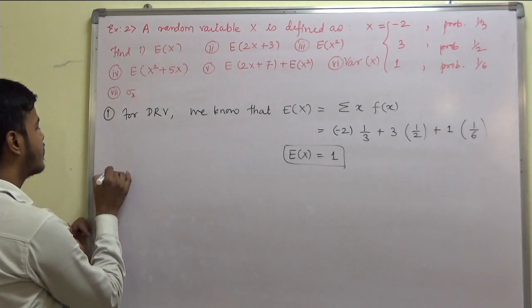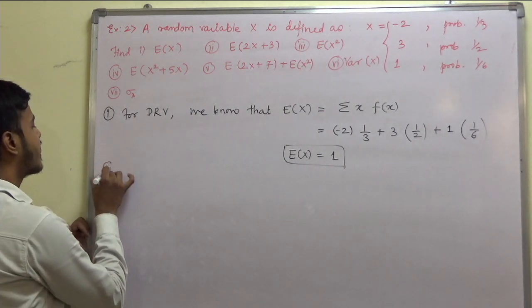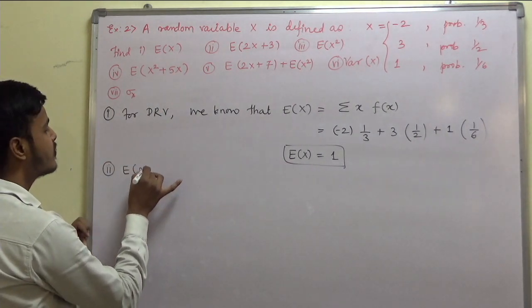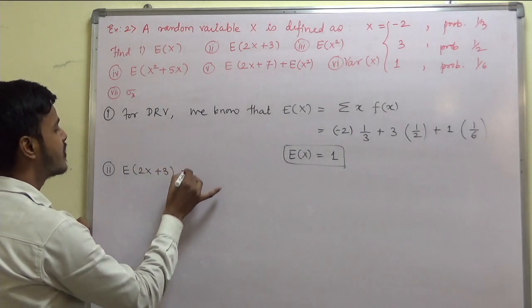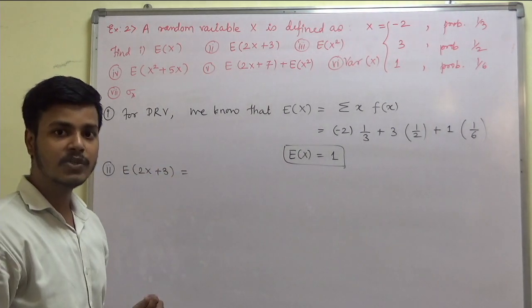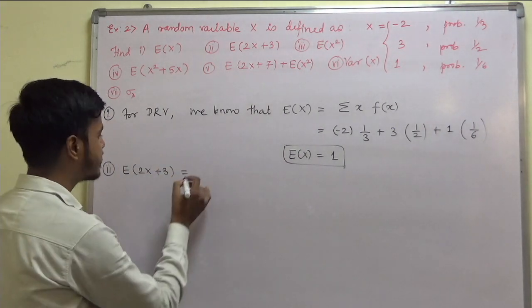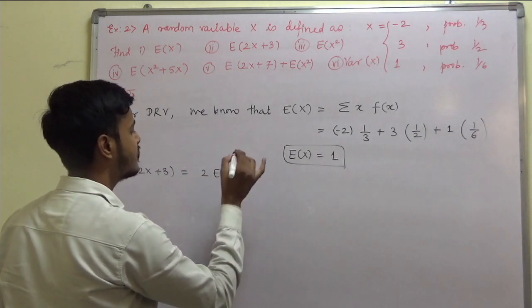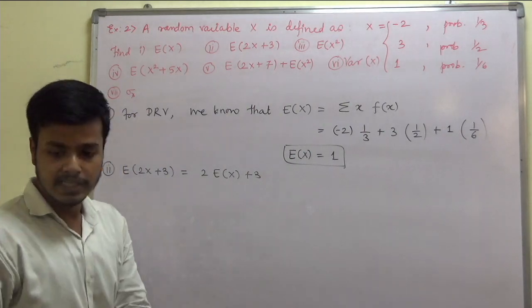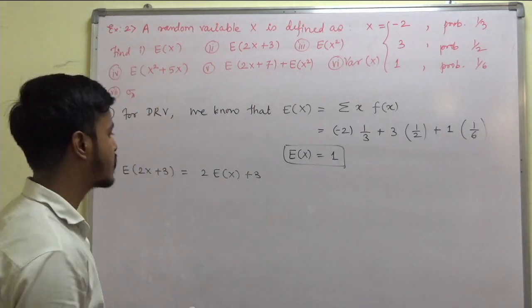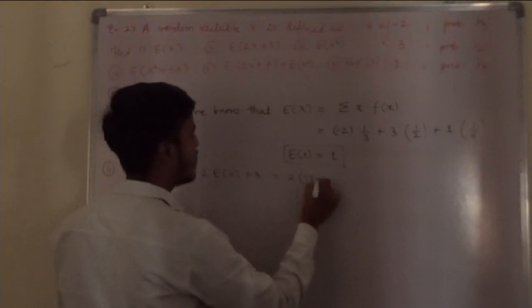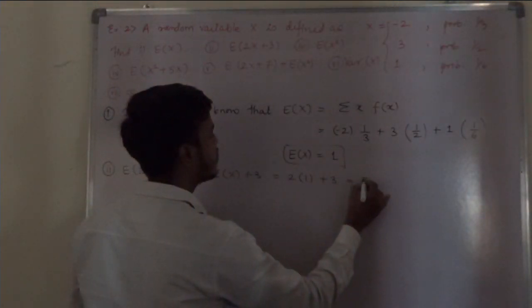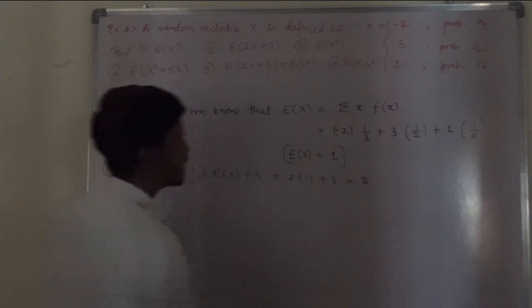Now let us find out the second one: expectation of 2x plus 3. This equals 2 times expectation of x plus 3. Since we just found expectation of x is 1, this is 2 into 1 plus 3, which equals 5.